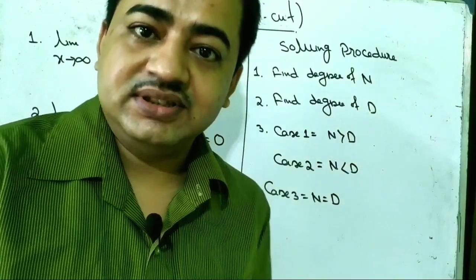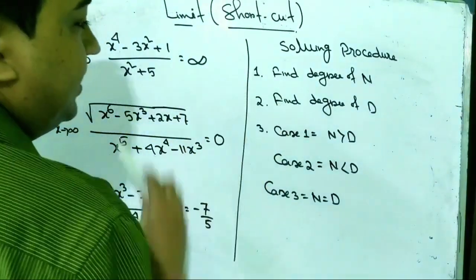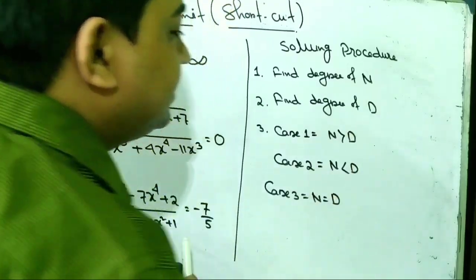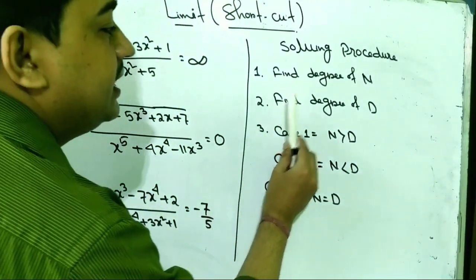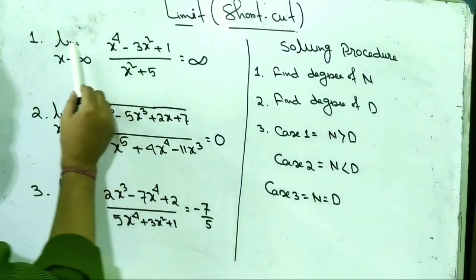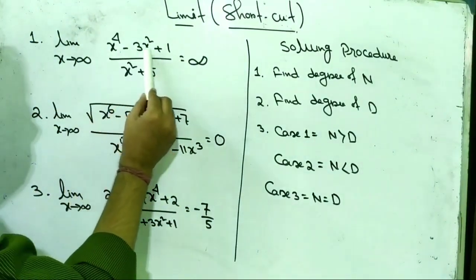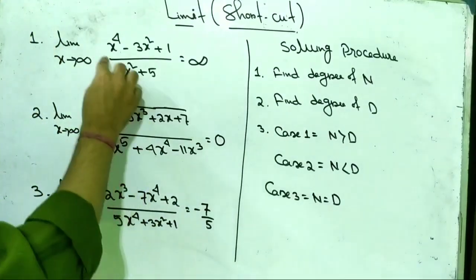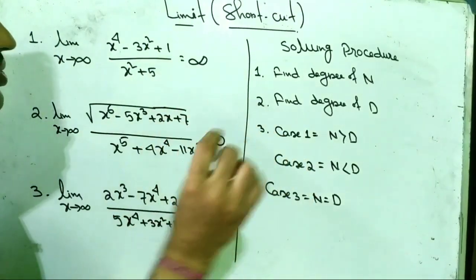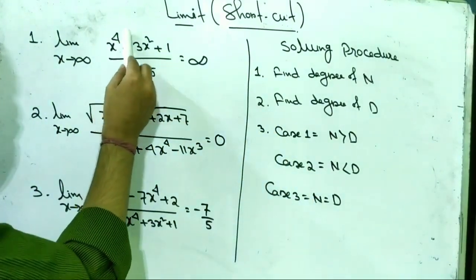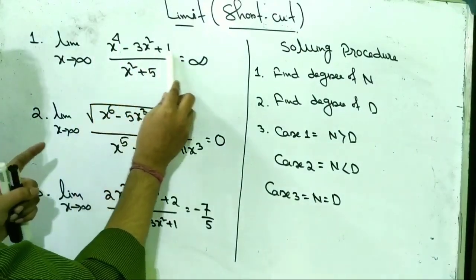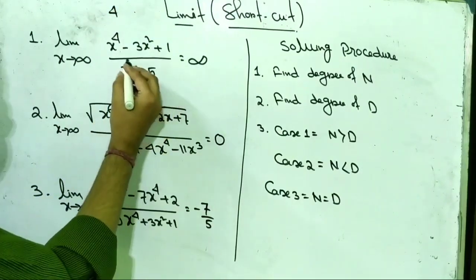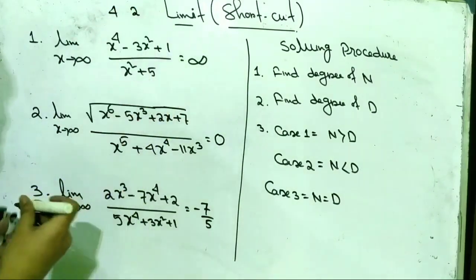So what are these super tricks? Let's see. First, we find the degree of the numerator, and then we find the degree of the denominator. In the first problem, degree of numerator means the highest power of the variable — here x to the power 4 — so the degree of the numerator is 4, and the degree of the denominator is 2.